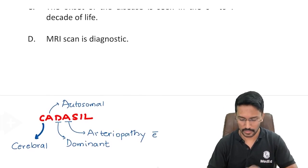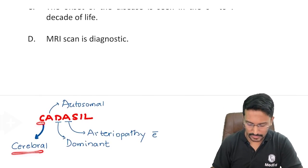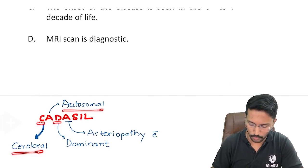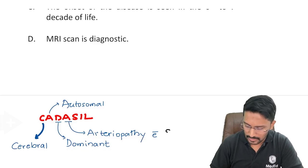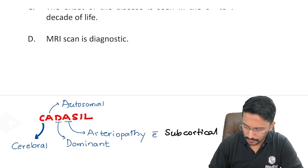CADASIL is basically an acronym which stands for C for cerebral, A for autosomal, D for dominant, A for arteriopathy with S for subcortical infarcts, and L for leukoencephalopathy.